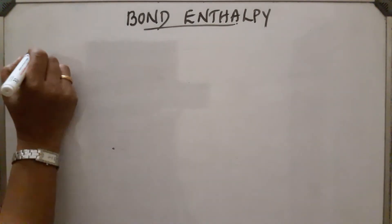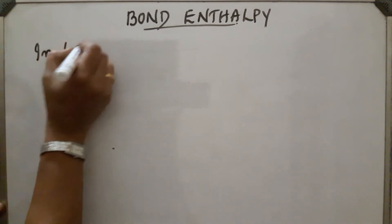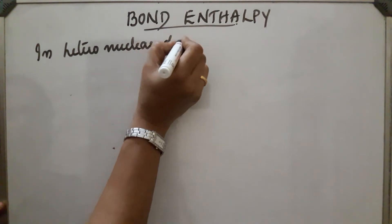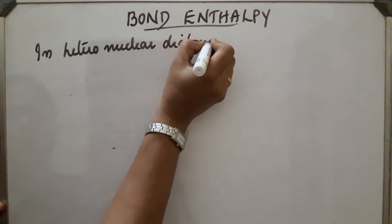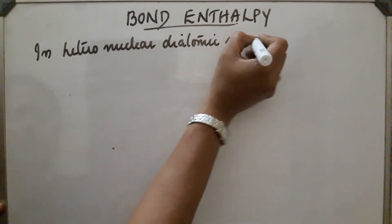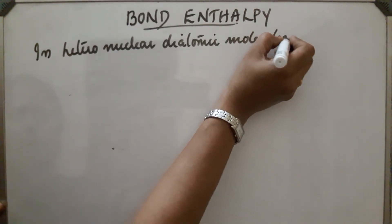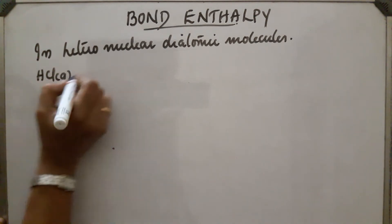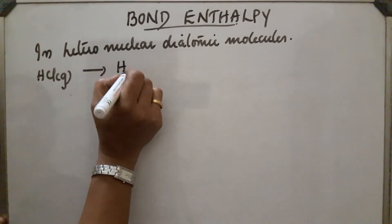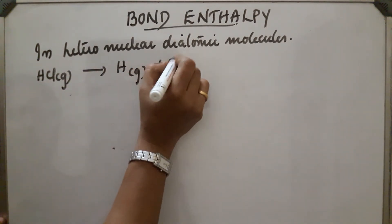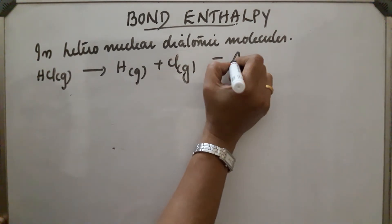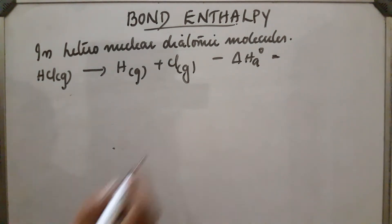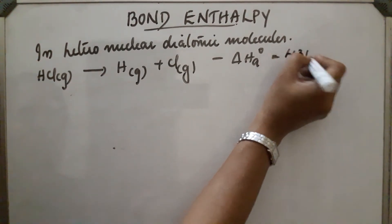In heteronuclear diatomic molecules, take the example of HCl. It is converted into a hydrogen atom and Cl atom. The bond dissociation energy is found to be 431 kilojoule per mole.